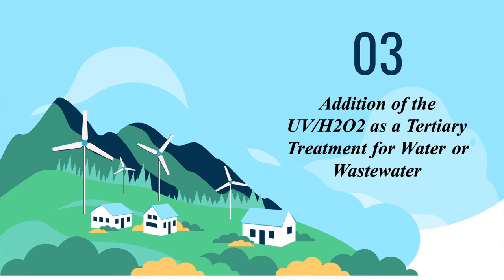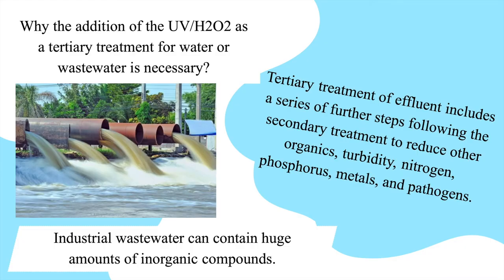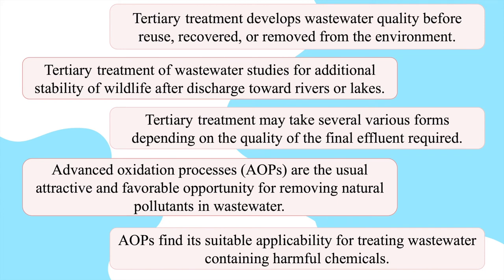My name is Alma Sajada and I am going to talk about the application of UV peroxidation as a tertiary treatment for water and wastewater. Industrial wastewater can contain huge amounts of inorganic compounds. Tertiary treatment for effluent includes a series of further steps following secondary treatment to reduce organic turbidity, nitrogen, phosphorus, metals and pathogens. Tertiary treatment improves wastewater quality before reuse, recovery, or discharge into the environment, and also provides additional stability for wildlife after discharge to rivers or lakes.